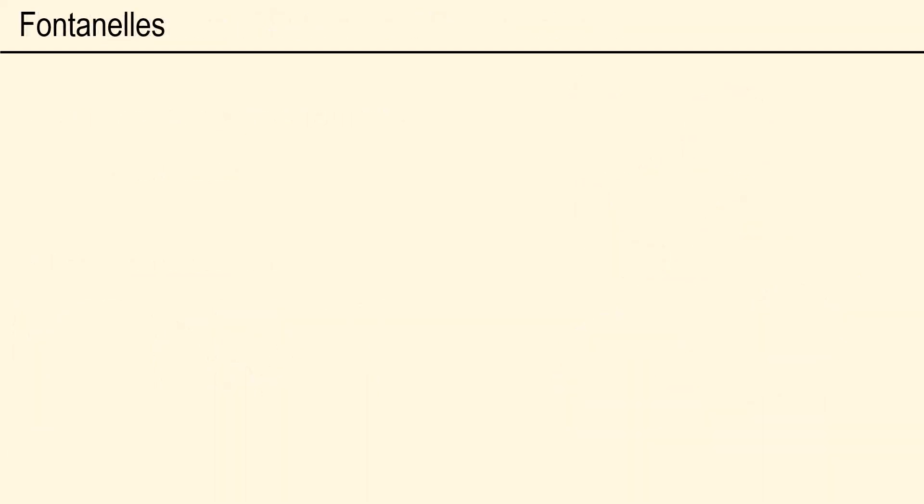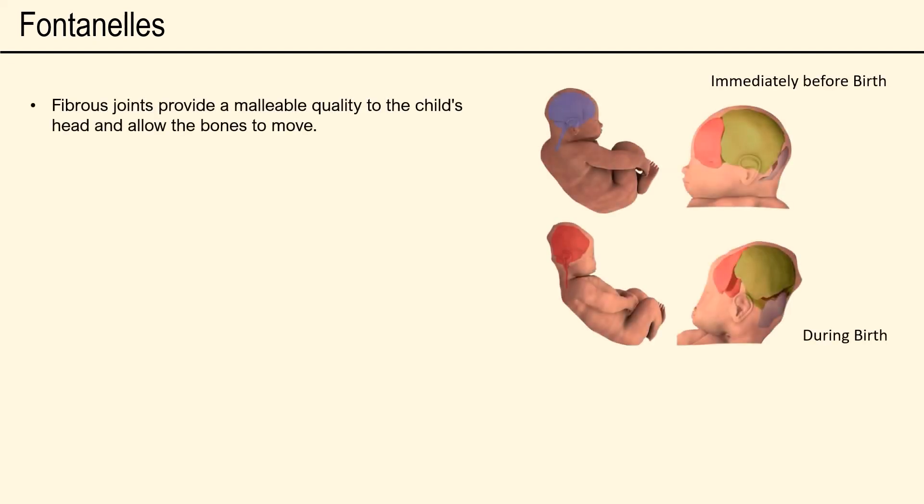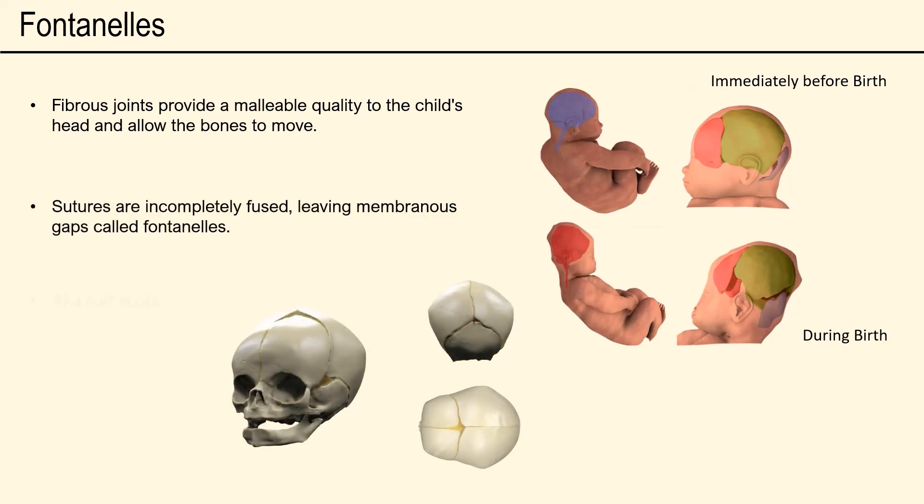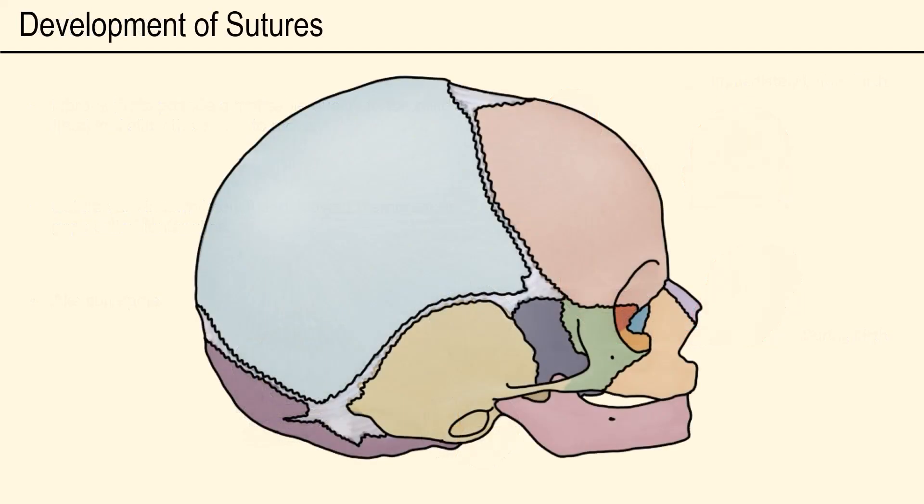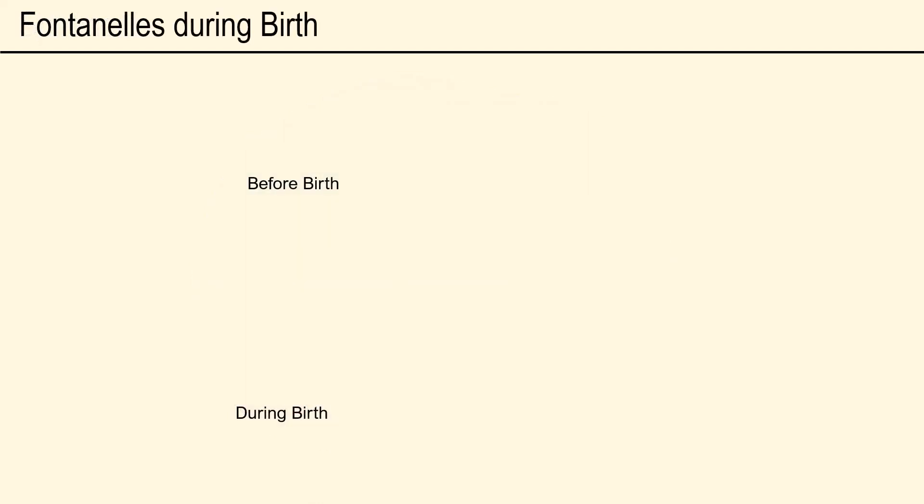The rate at which sutures fuse and ossify is physiologically relevant. During childbirth, the fibrous joints provide malleable quality to the child's head, allowing the bones to move. In neonates, junctions are incompletely fused, leaving membranous gaps called fontanelles. Fontanelles are also often called soft spots. There are six fontanelles: the frontal, the occipital, the mastoid, and the sphenoid fontanelles. The lateral pressures on the skull during birth allow for superior displacement of the parietal bones for easier passage, which can remain displaced for a few hours post birth.